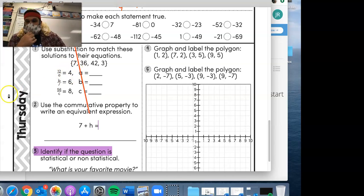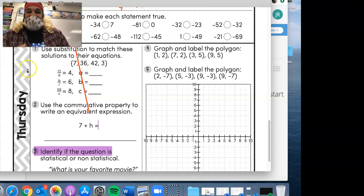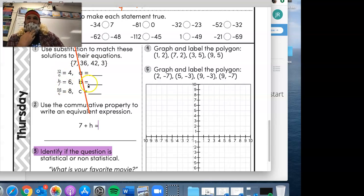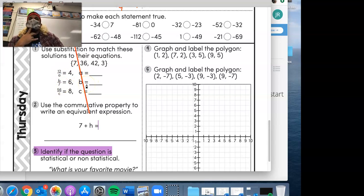Substitution to match these solutions to their equations. If we look at it, it really is a fraction. 12 over A equals 4. A fraction is nothing more than a division problem. So 12 divided by what equals 4? The answer is 3. A equals 3.